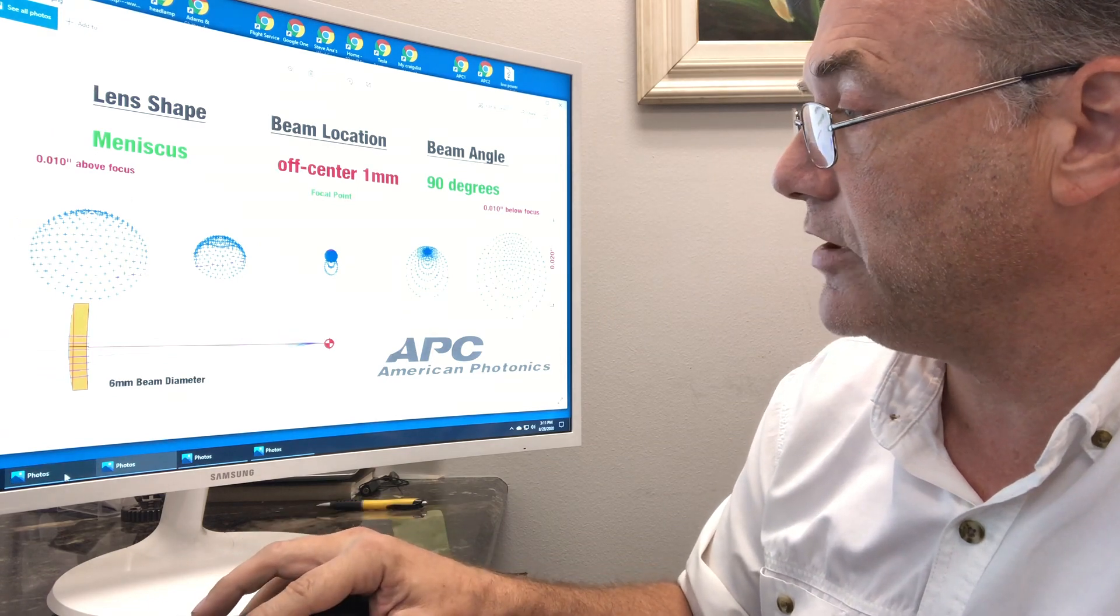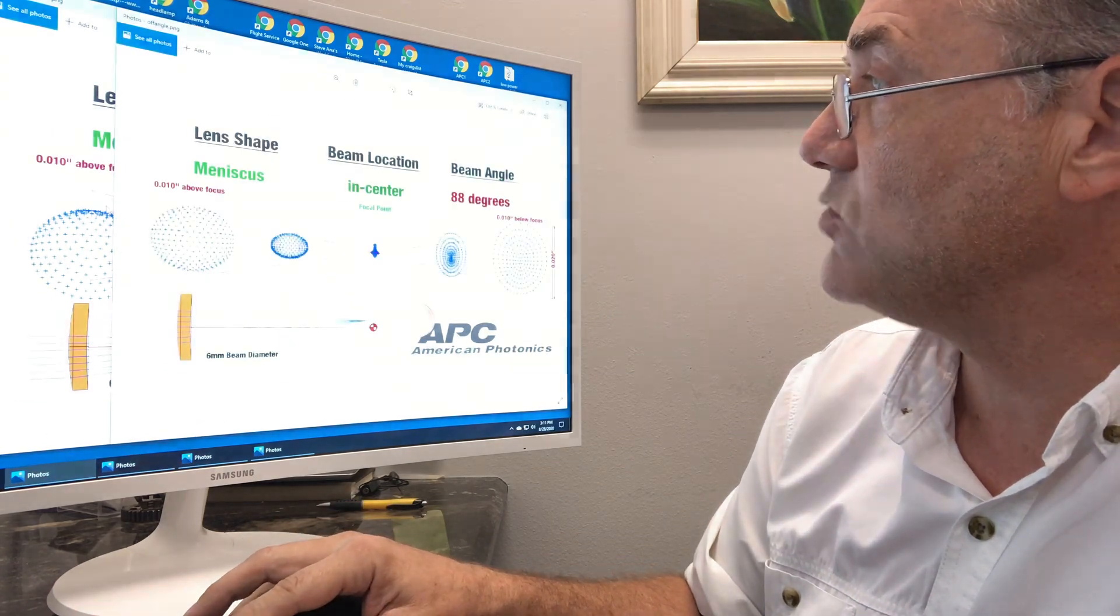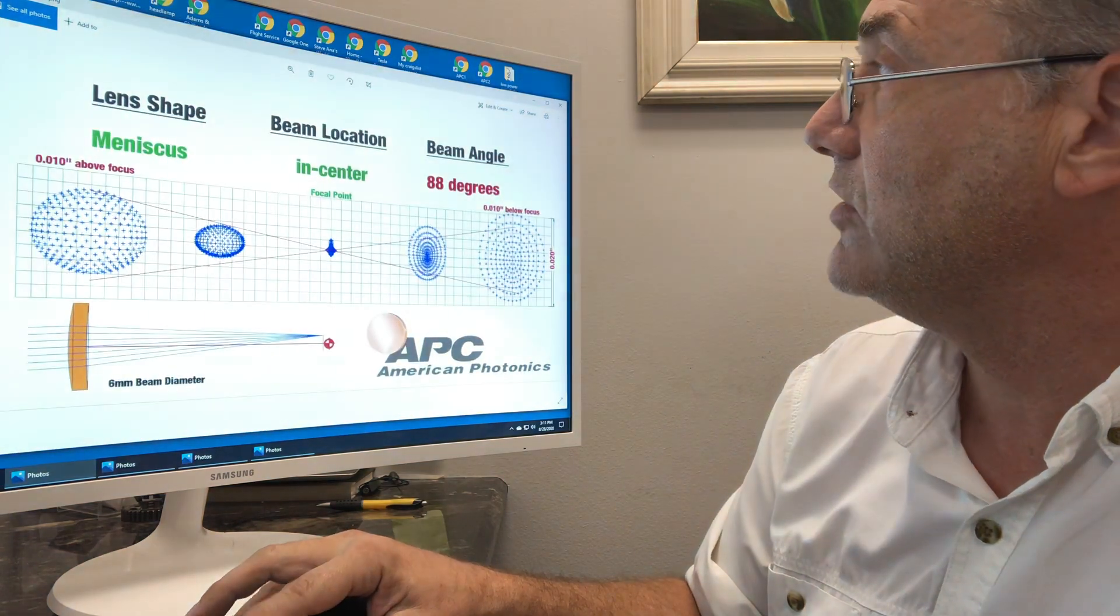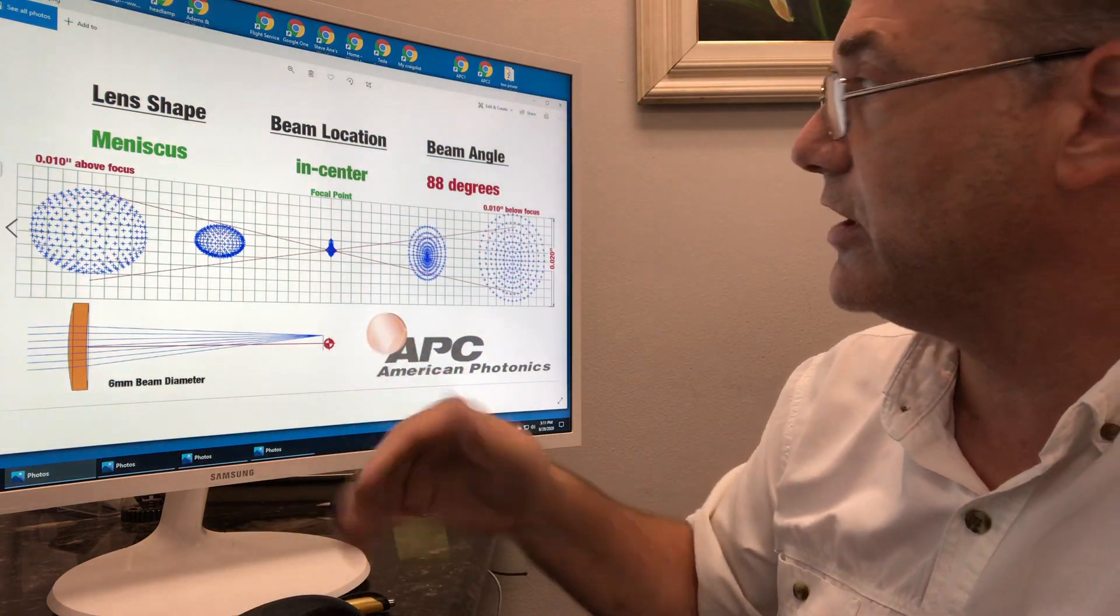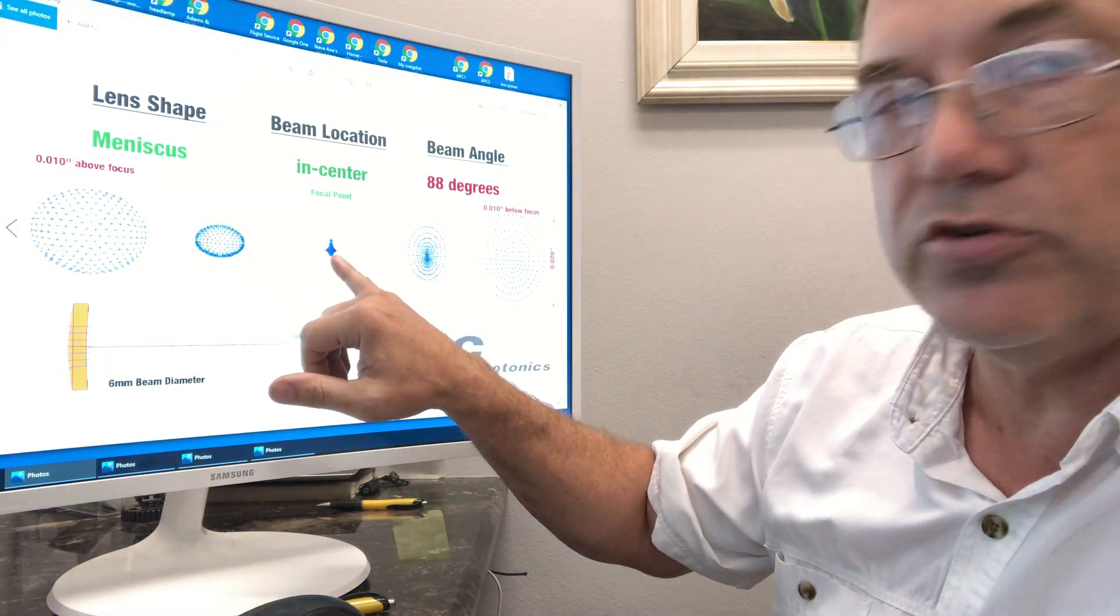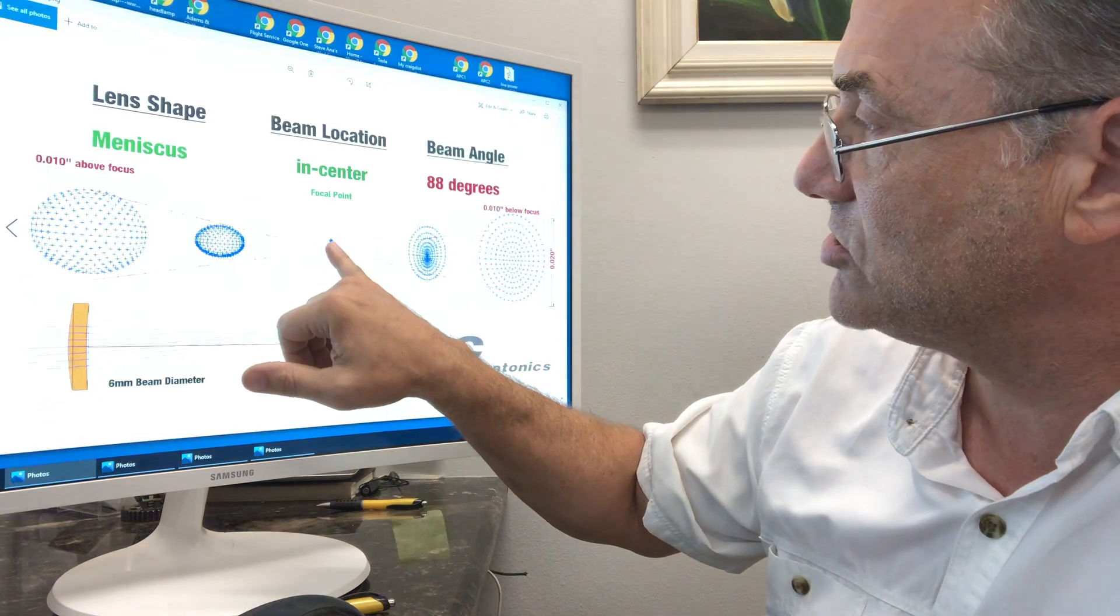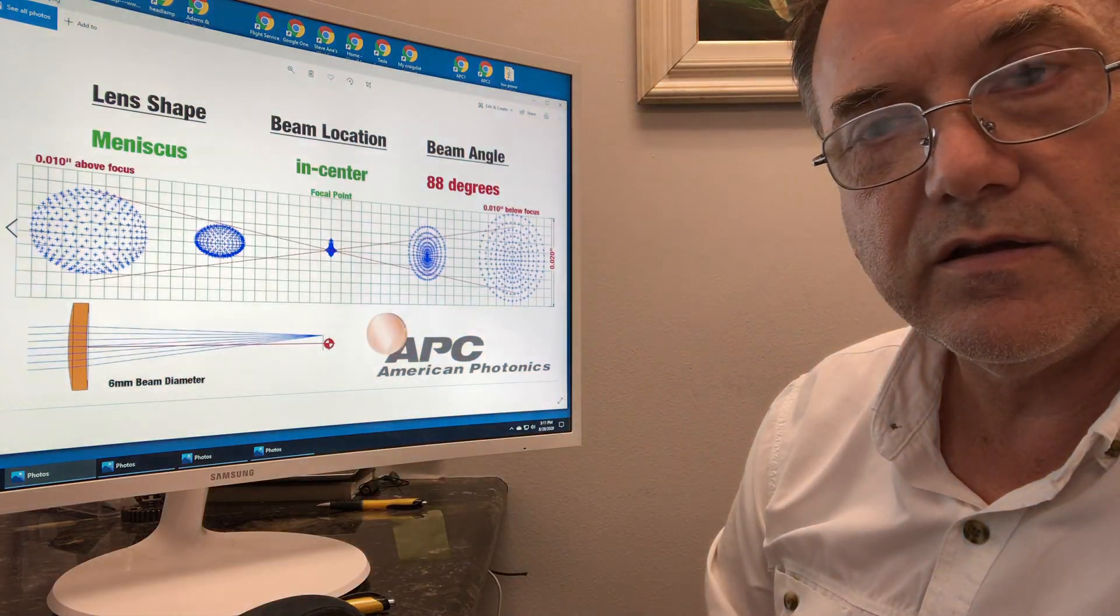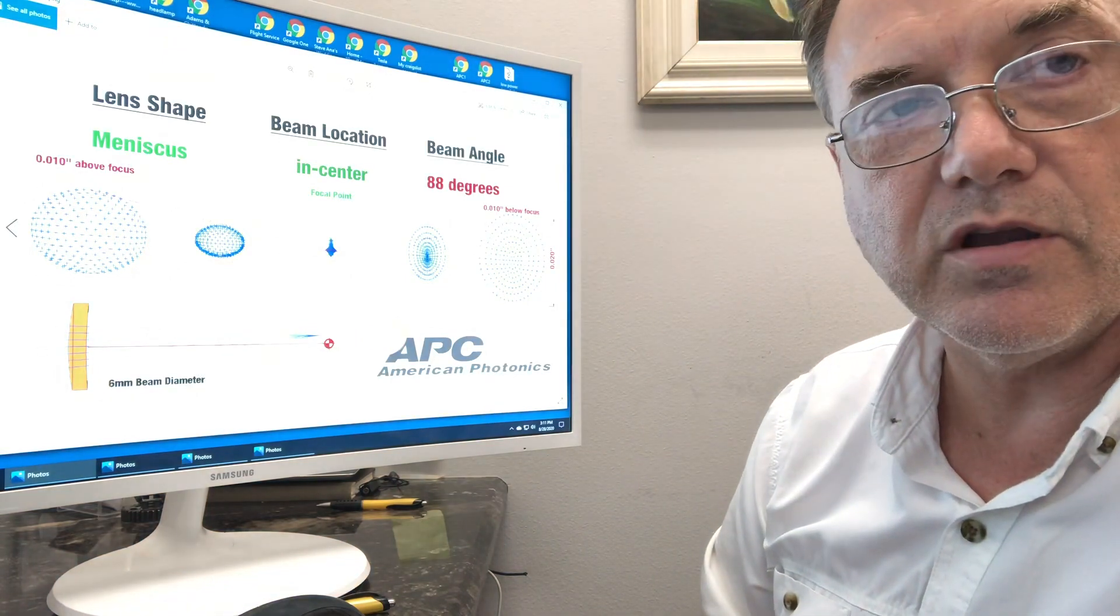And then I have one more drawing here I want to show you. This is what happens when you just add an angle. Let's say you do have it right at 90 degrees, but you've cocked your lens to get it down. Again, you see a nice high energy density here where you do have a point, but you have this skewed energy that comes up there. It's not going to be enough to cut. It's just going to char. It's going to burn.